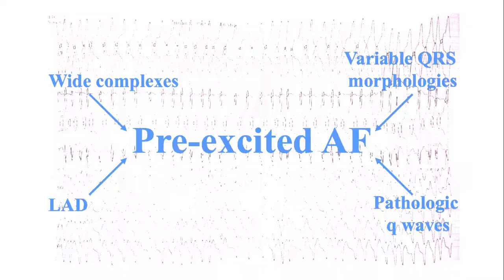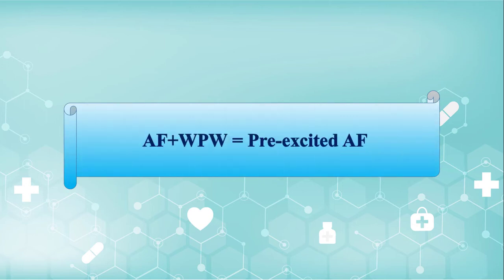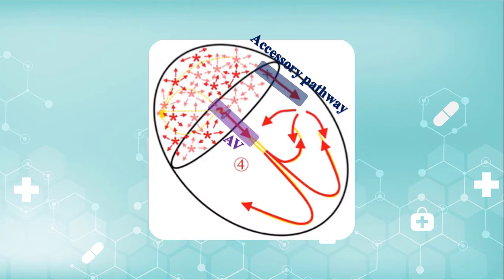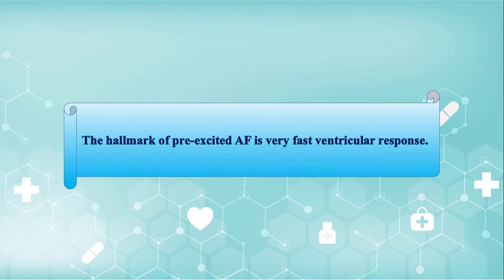In comparison to the general population, individuals with WPW are more likely to develop AF. Atrial fibrillation with a manifest accessory pathway is known as pre-excited AF. In pre-excited AF, atrial impulses are conducted to the ventricles through both the accessory pathway and the AV node. The accessory pathway causes atrial impulses to bypass the AV node and reach the ventricles faster than usual, which is why the hallmark of pre-excited AF is a very fast ventricular response.